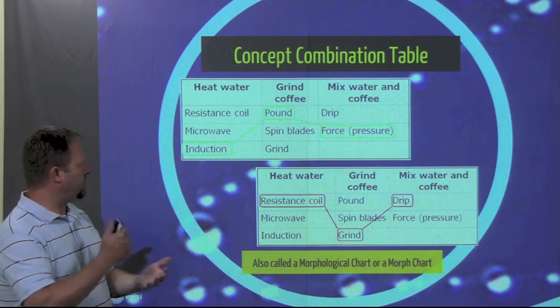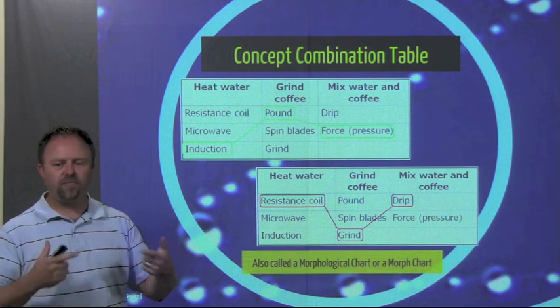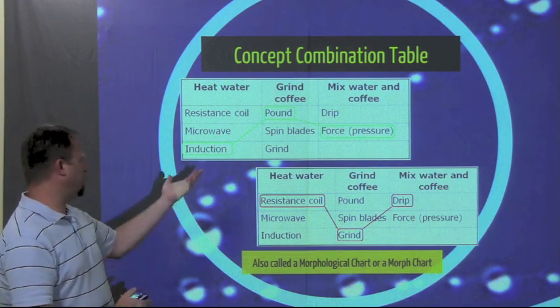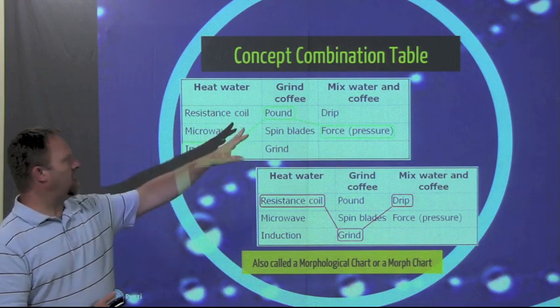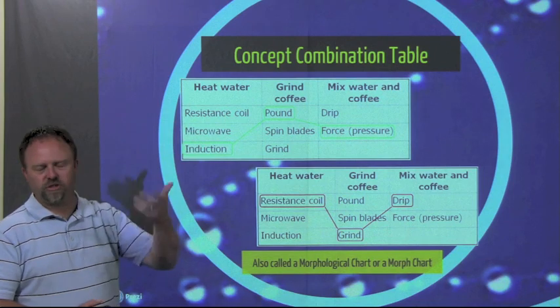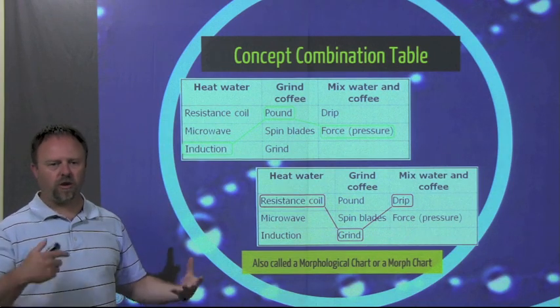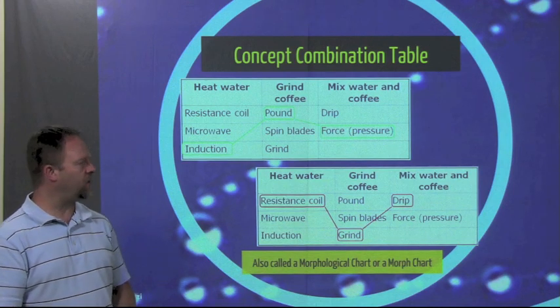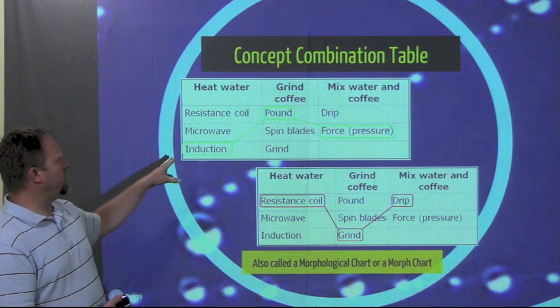And then there's different ways to mix the coffee and the water together. Most coffee makers are a drip one, or where the water pressure is forced into the coffee grounds. And then what you do is that you look at - take one idea from each column and piece them together to get an overall design.